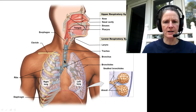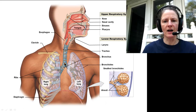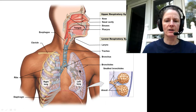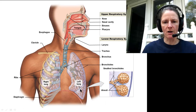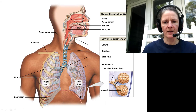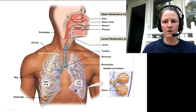The trachea is the main conducting pathway, branching into primary bronchi — a left and right bronchus. The right bronchus is a little wider in diameter and steeper. The left bronchus must accommodate the fact that the left lung shares its side with the heart, with a cardiac notch. The left lung is a little longer but more slender than the right lung. The right lung is shorter and fatter because the diaphragm on the right is elevated by the liver.